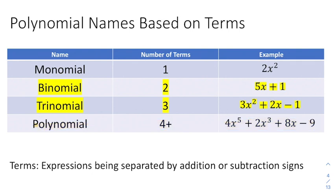The two interesting ones we'll talk about a lot in this chapter are binomial and trinomial. Binomial means there are two terms, and trinomial means there are three terms.